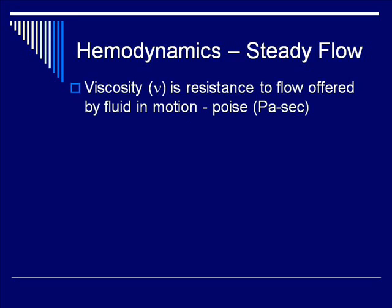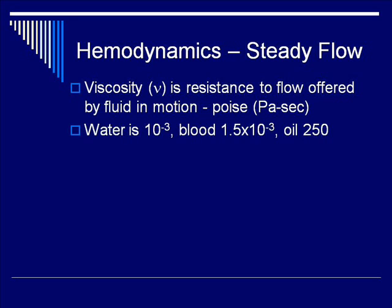Now let's talk about the resistance factor in the Hagen-Poiseuille equation. Viscosity, nu, is a resistance to flow offered by fluid in motion, measured in units of poise. In water, that number is 10 to the minus 3. Blood is higher, 1.5 times 10 to the minus 3. And oil, as you recall, is very thick and therefore its viscosity is much higher.